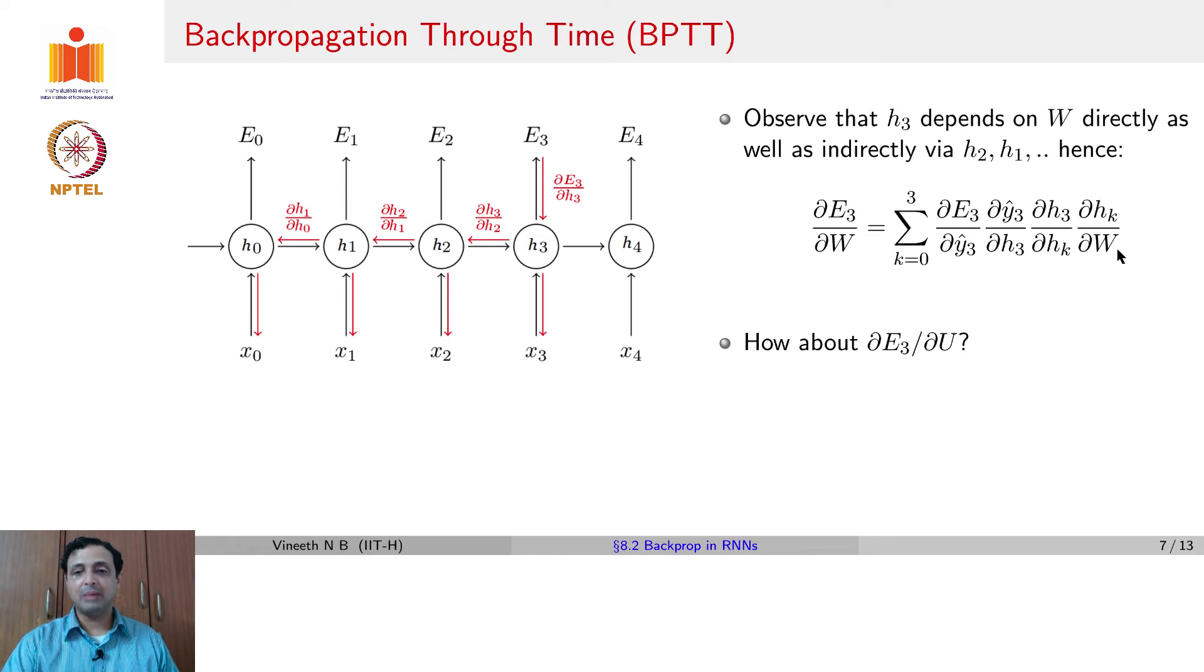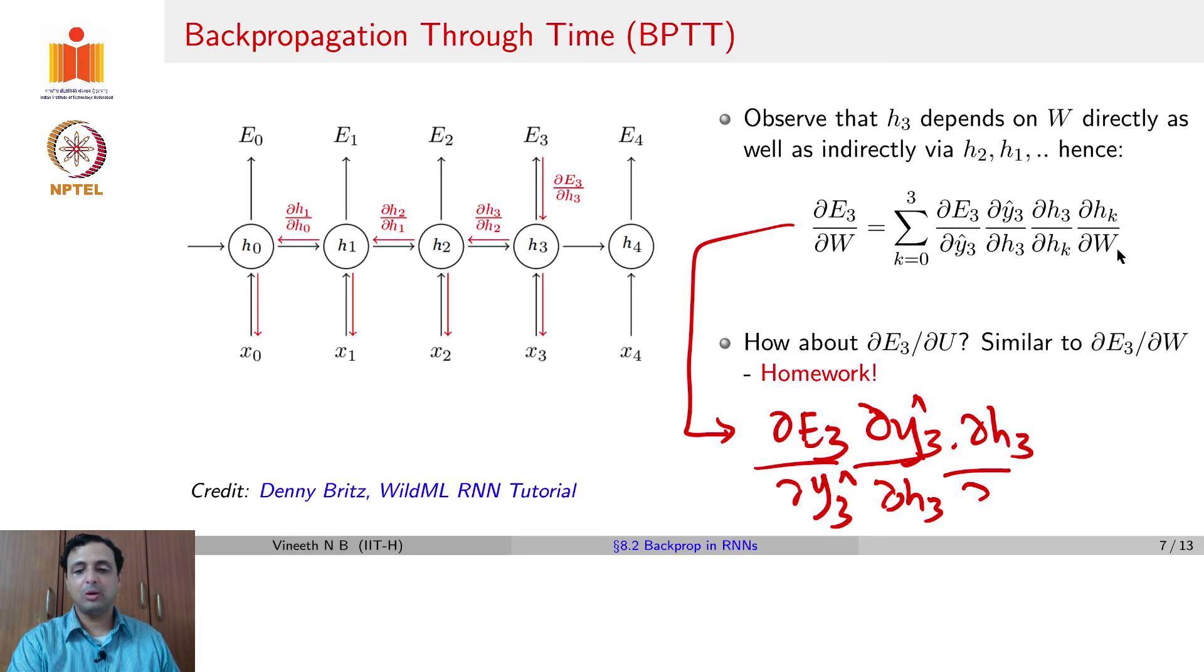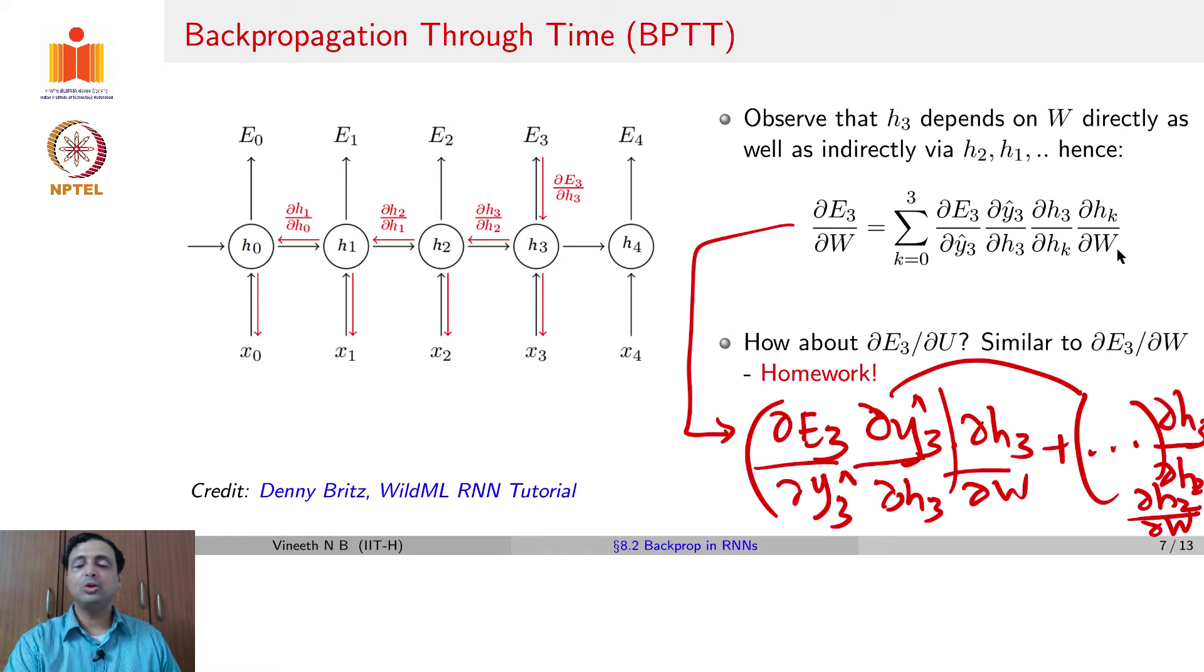What about ∂E_3/∂U? We are going to leave that as homework because it is going to be very similar to ∂E_3/∂W. You only have to apply the chain rule in a principled manner. Just to complete this discussion. So if one had to look at this, how would it look in expansion? It would look like ∂E_3/∂Y_3hat into ∂Y_3hat/∂H_3 into ∂H_3/∂W plus all these, the first two terms will just repeat as they are. And then you will have ∂H_3/∂H_2 into ∂H_2/∂W and you will have further summations that do similar chain rules for H_1 and so on and so forth.